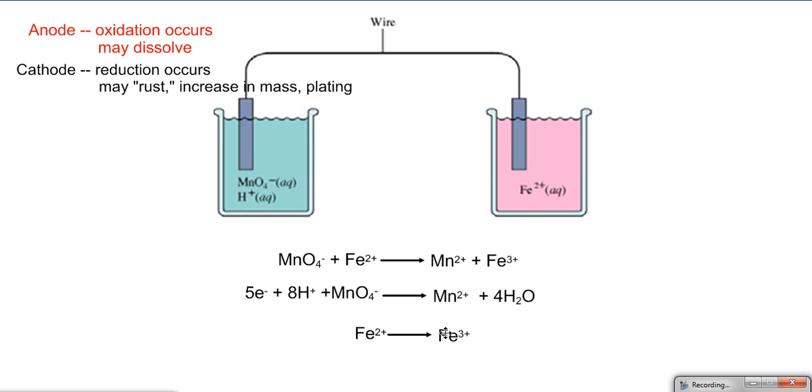Down below we have plus two, we've got plus three, so all I need to do is take that charge down by one to get plus two on both sides. We want these electrons to cancel out, so I'm going to multiply the iron half reaction by five, and now we can see the electrons cancel out and we're left with this overall reaction.